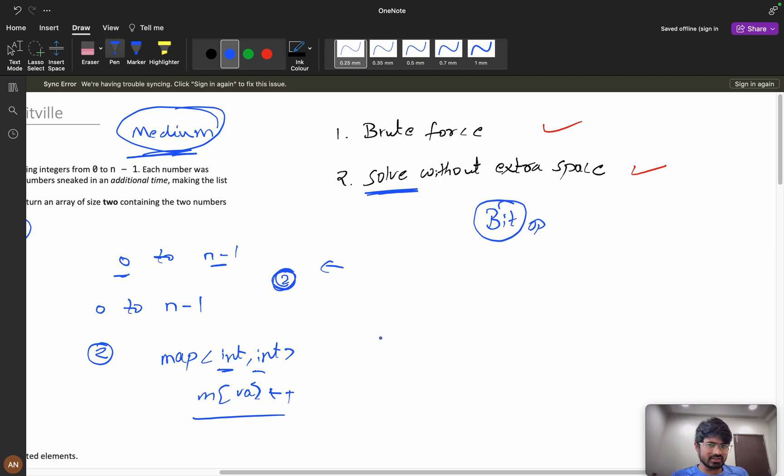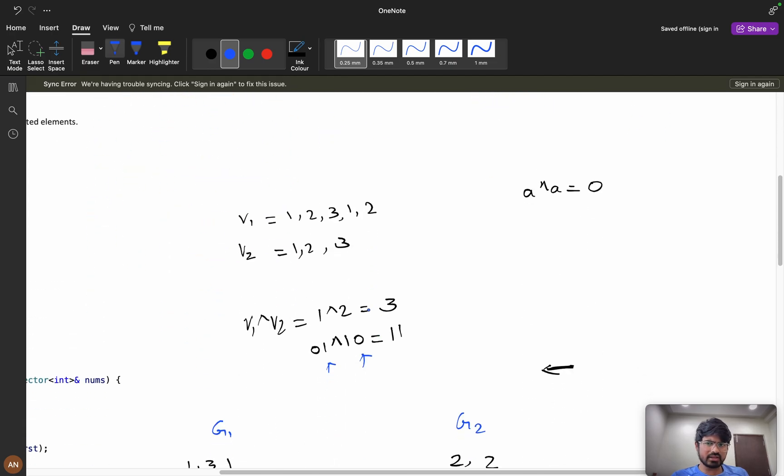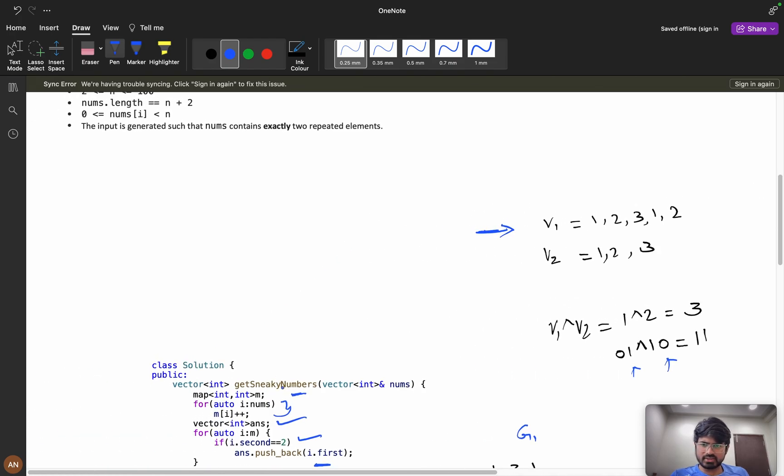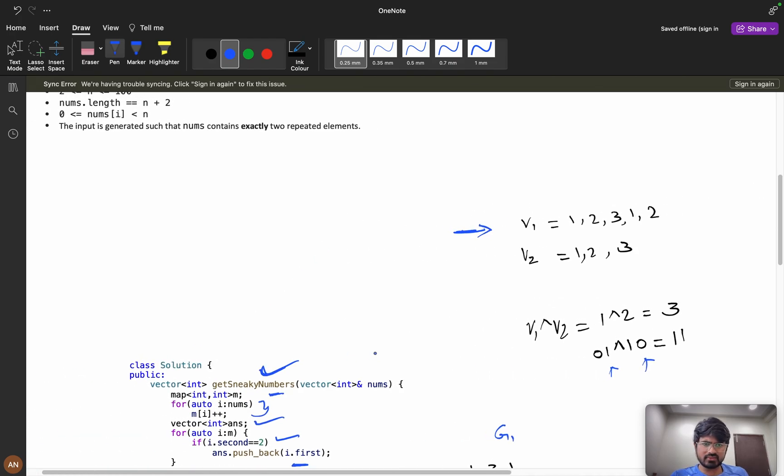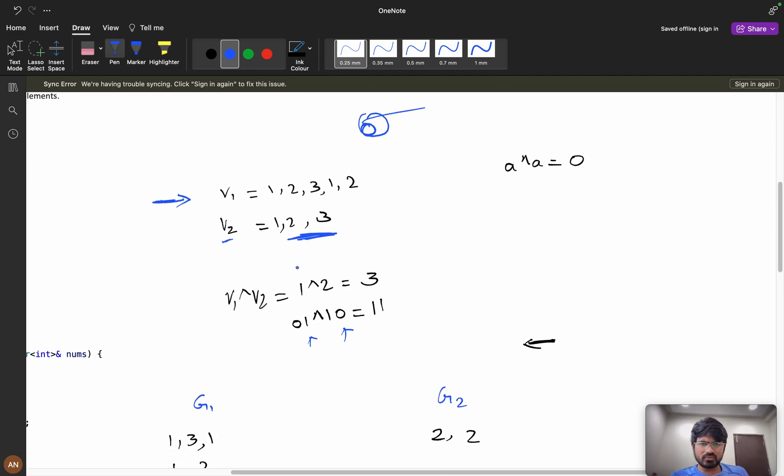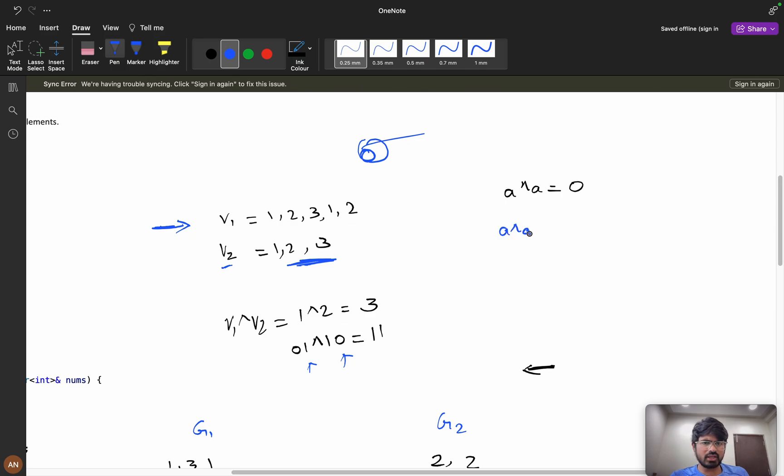I'm hoping that you have tried this. Now let's see the other solution. Consider v1 as 1, 2, 3, 1, 2, and v2 as 1, 2, 3. This is my vector which the get sneaky numbers method will get: 1, 2, 3, 1, 2. But my actual numbers are 1, 2, 3. We are avoiding zero for now, just for an example.